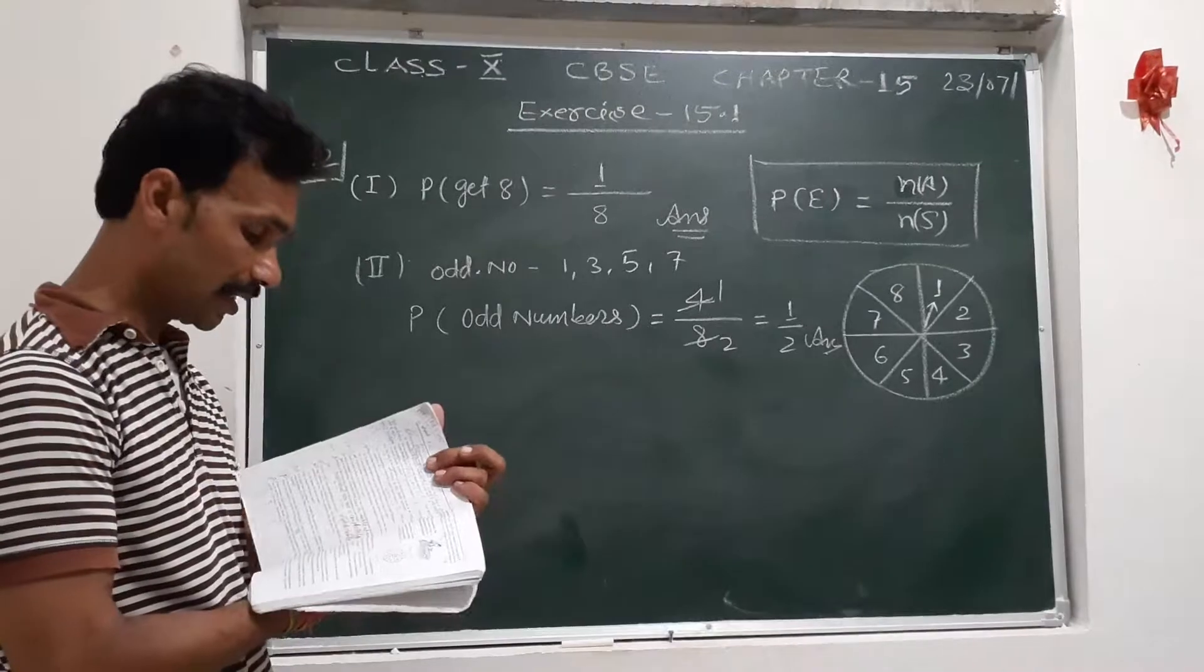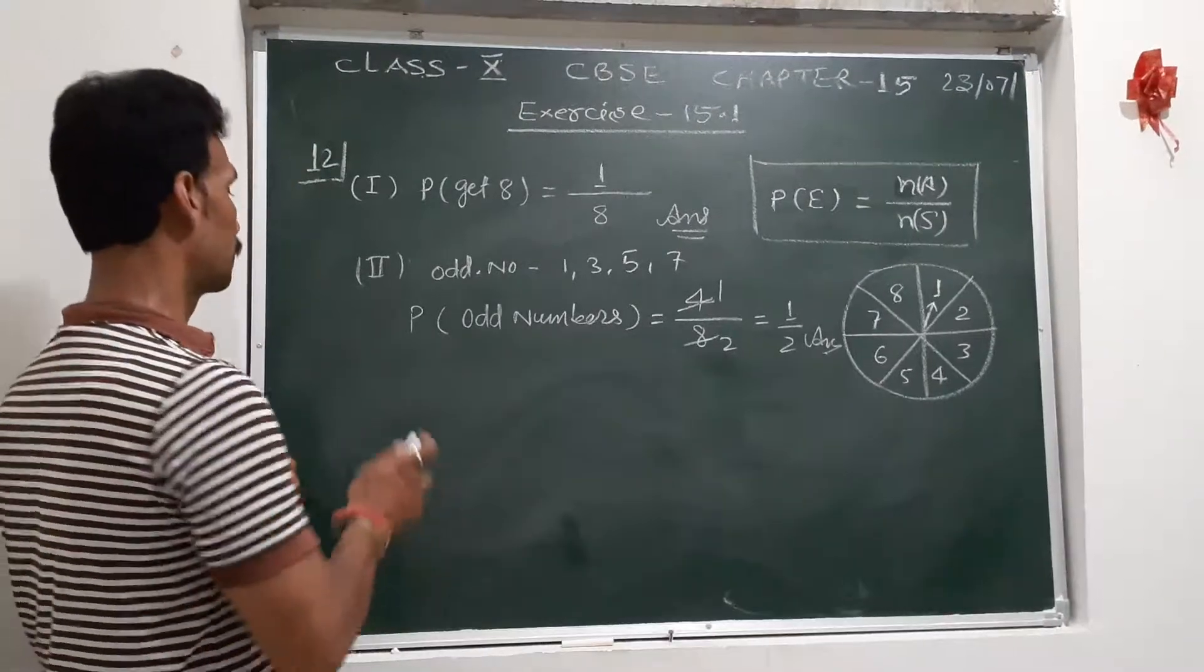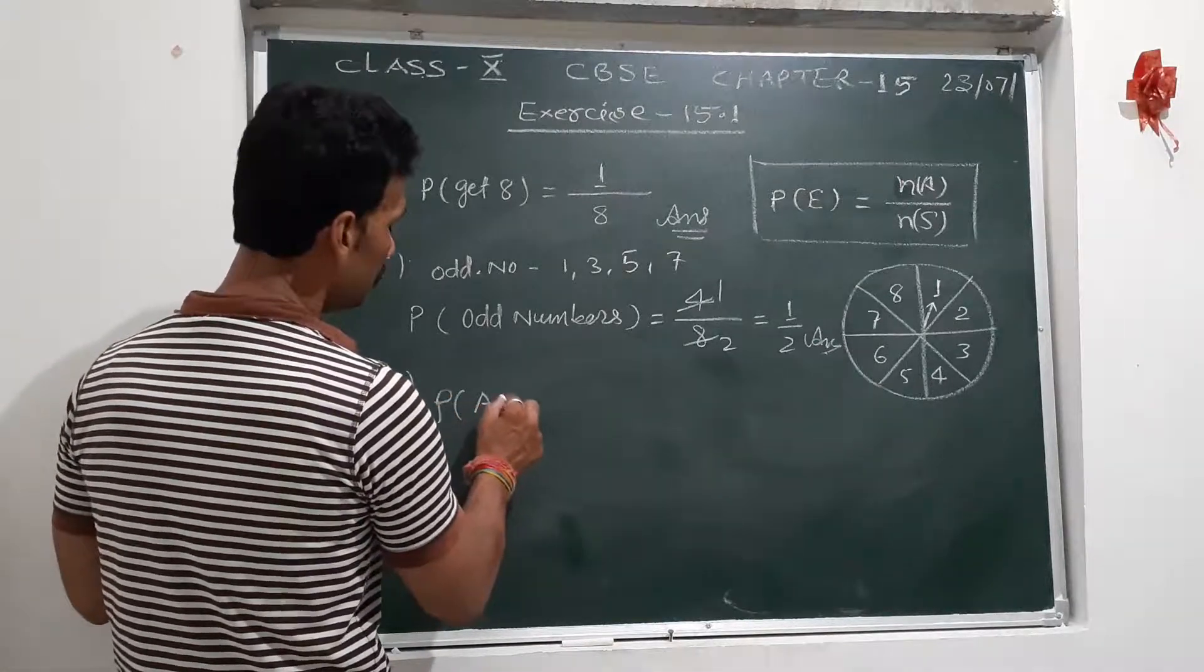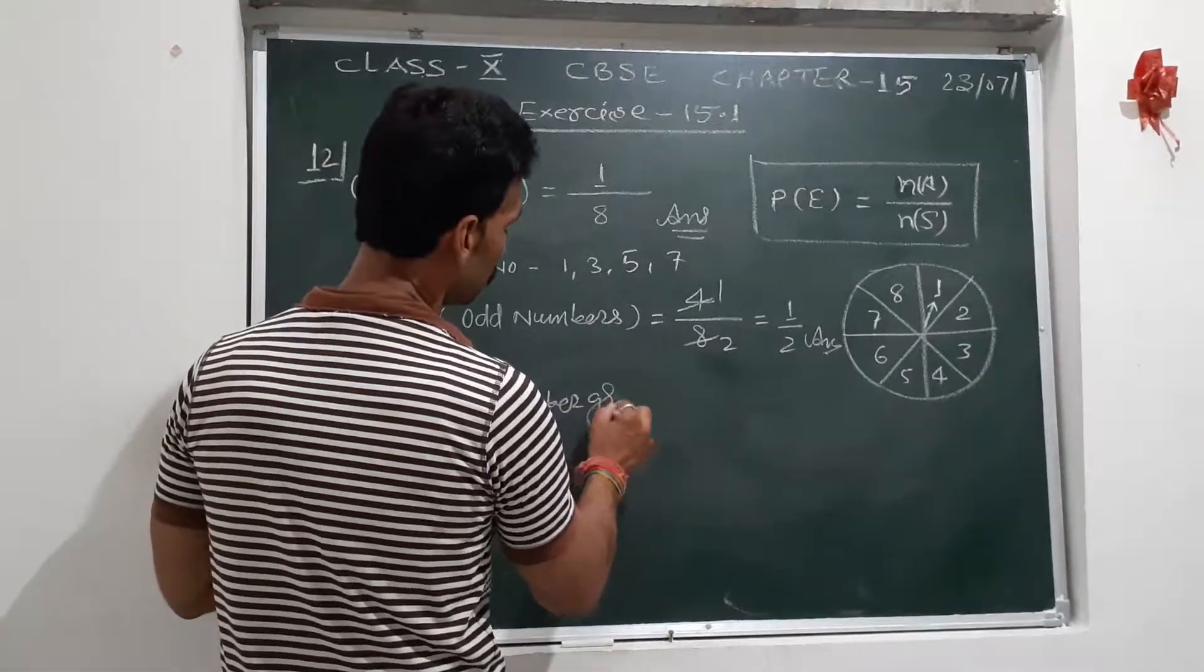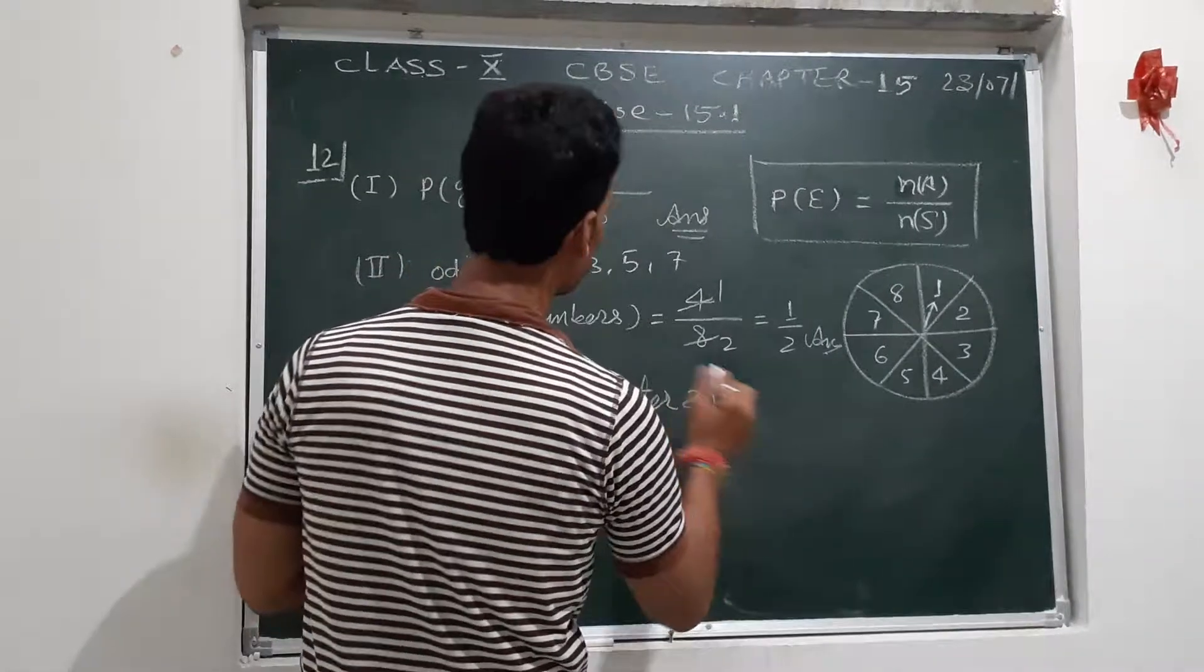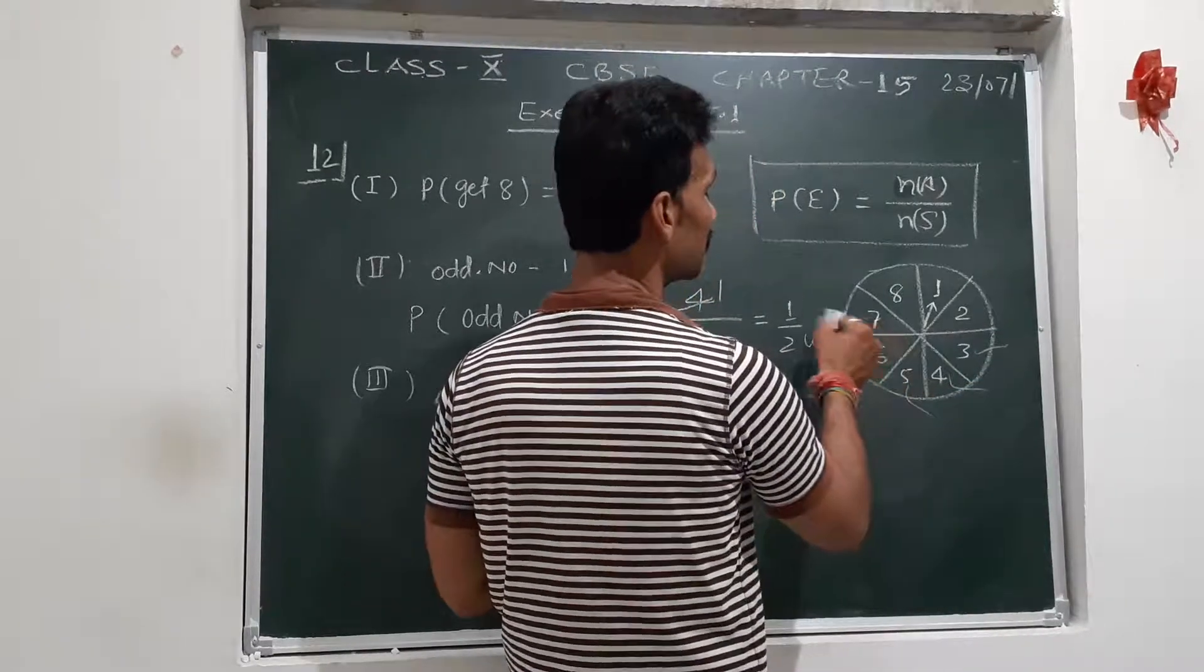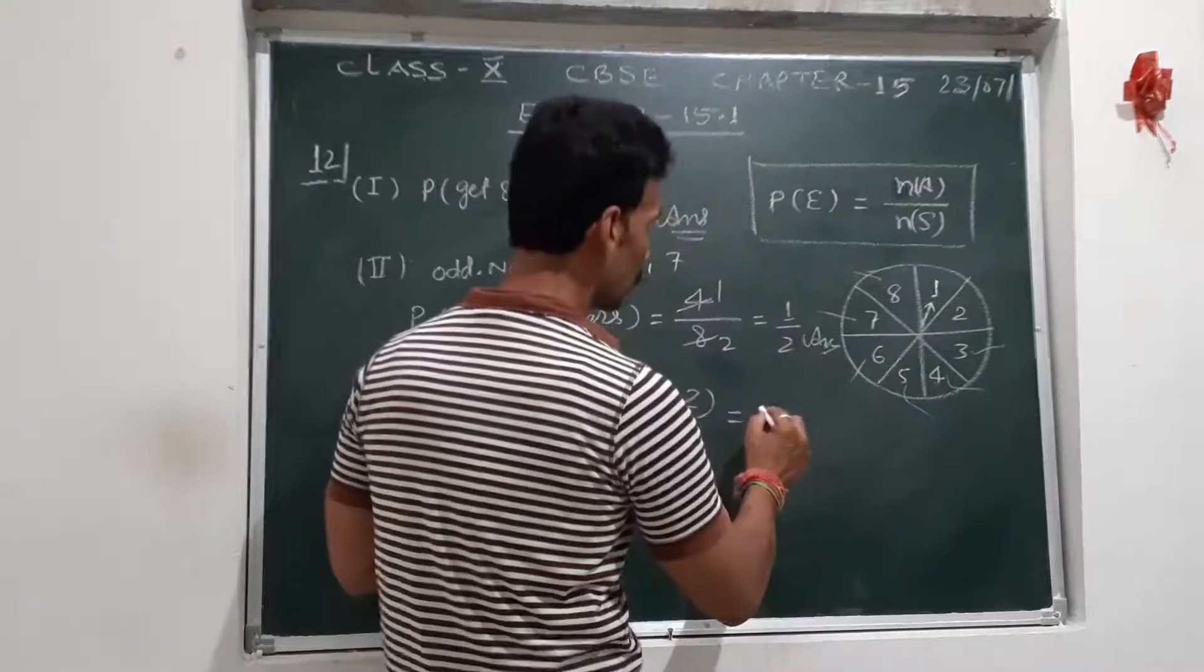Then next, third one: a number greater than 2. So probability of a number greater than 2. Now, you see: three, four, five, six, seven, eight - that's six numbers.